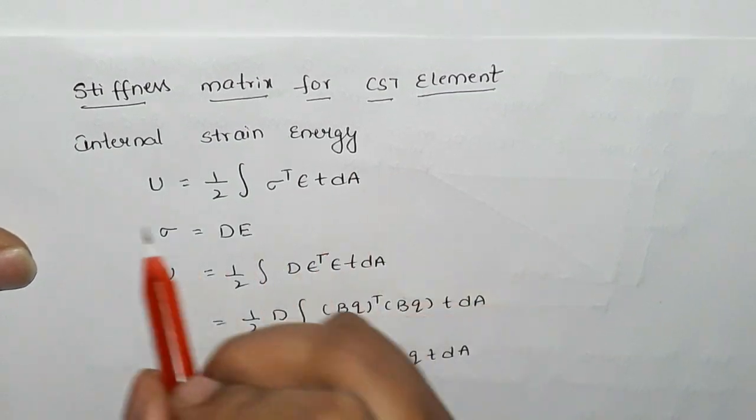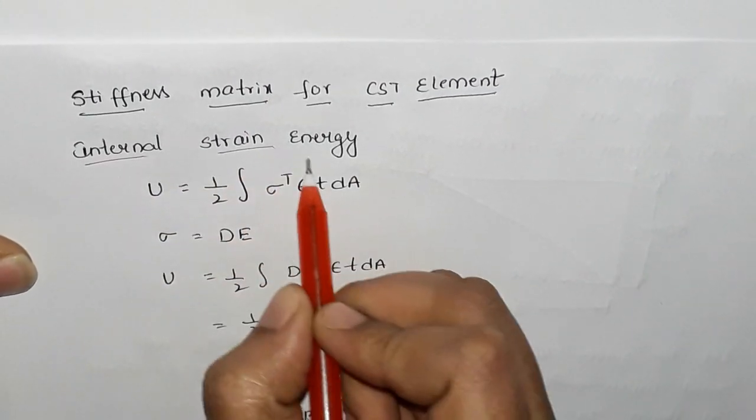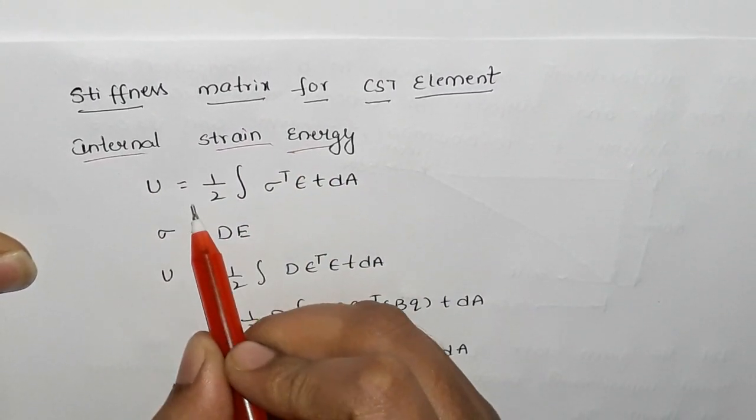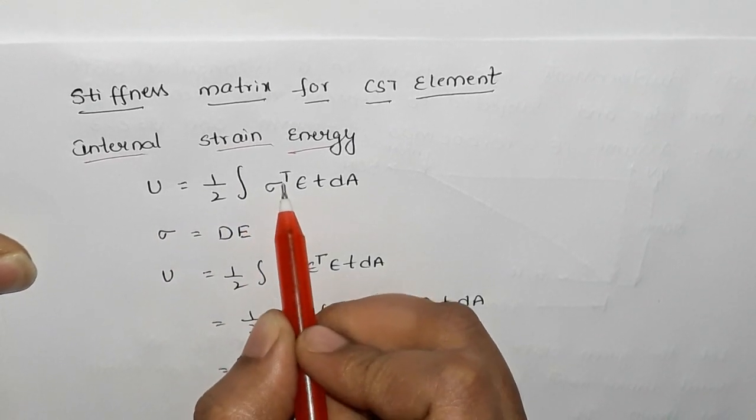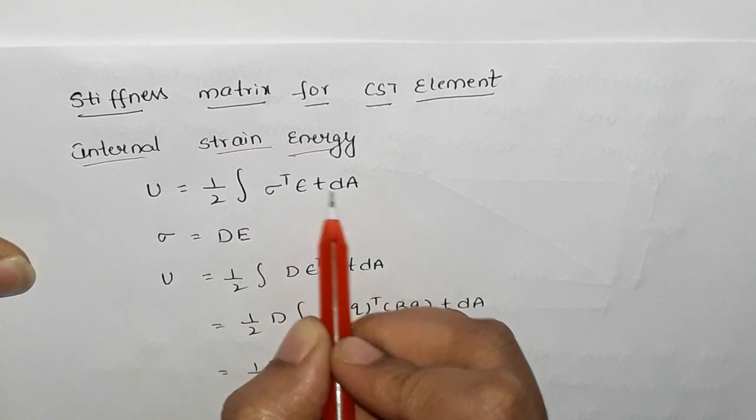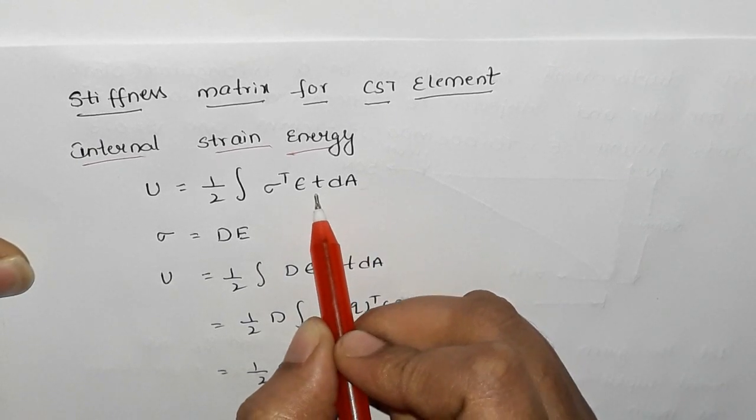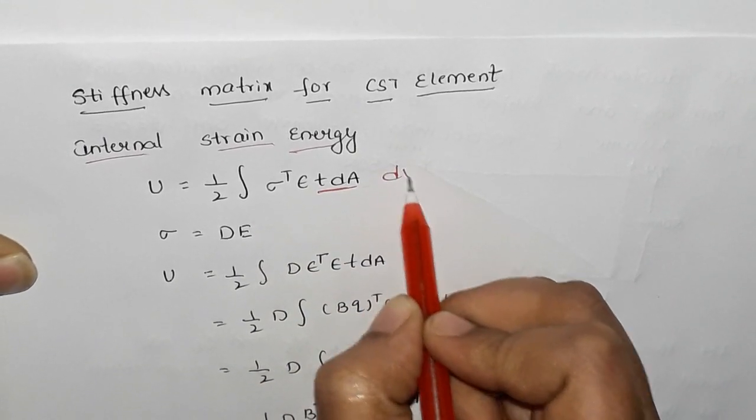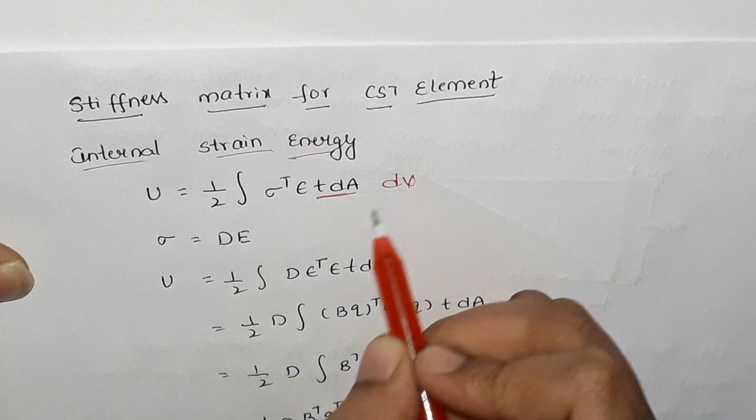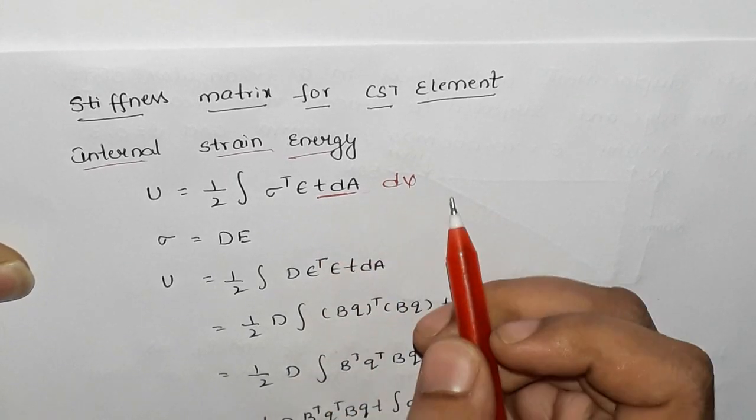First of all, internal strain energy formula is u equals half integral of sigma transpose epsilon TDA. TDA is nothing but dV, volume is thickness into dA. Then split up is T into dA is thickness into dA.